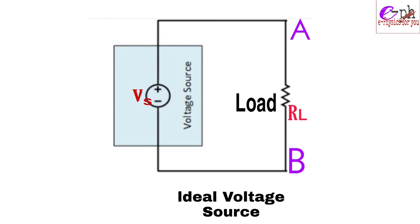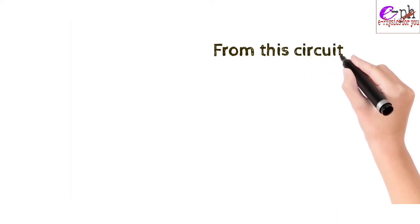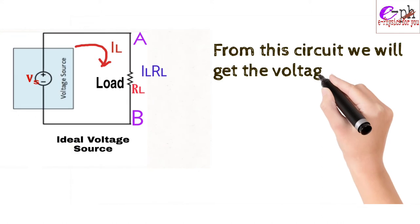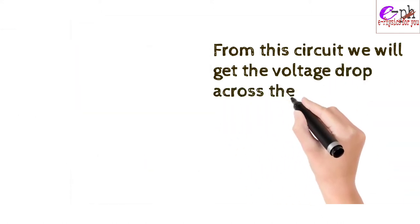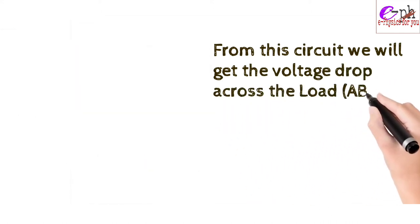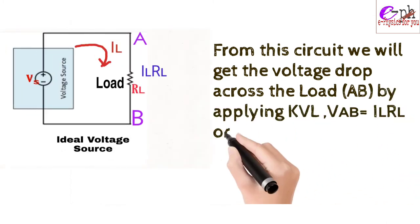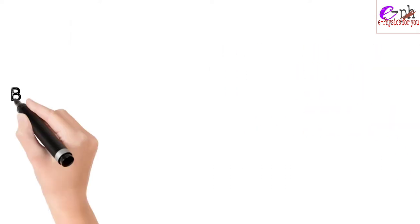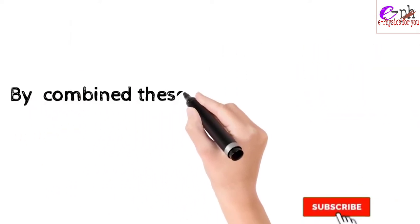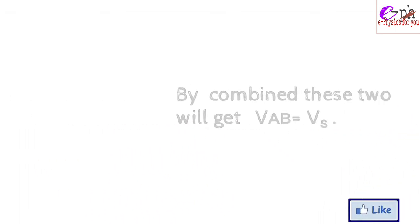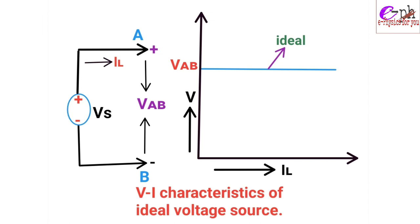This is the circuit diagram of an ideal voltage source. From the circuit, we get the voltage drop across the load AB by applying Kirchhoff's Voltage Law: V_AB = I_L × R_L. We can also write V_S = I_L × R_L. Combining these two equations, we get V_AB = V_S. This figure shows the circuit diagram and the V-I characteristics of an ideal voltage source.